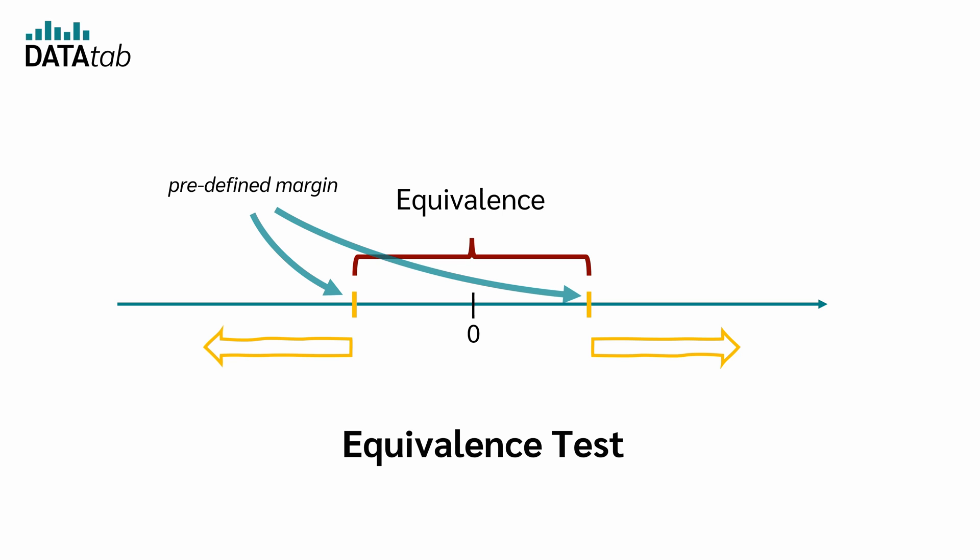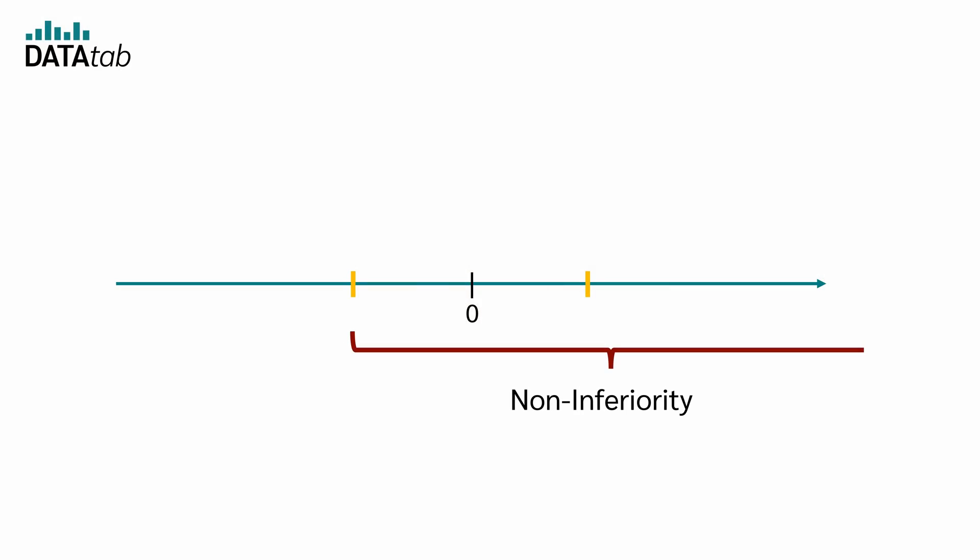The aim is to show that the new treatment's effect falls within an acceptable range — neither significantly worse nor significantly better. In this scenario, you would use an equivalence test. Alternatively, if the new drug performing even better is acceptable but it just shouldn't perform considerably worse, then the aim is to demonstrate non-inferiority within a specified margin — and a non-inferiority test would be appropriate. Both the equivalence test and the non-inferiority test share similarities to the t-test, but you cannot simply use a normal t-test to answer these questions.